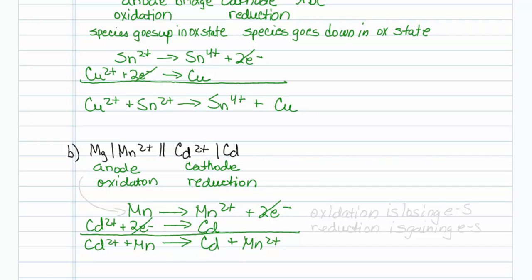Remember, my anode is oxidation, and oxidation is losing electrons and also going up in oxidation state, and reduction is gaining electrons. That's how you work battery notation.